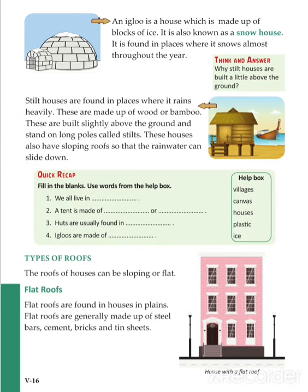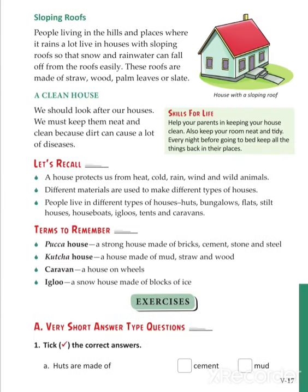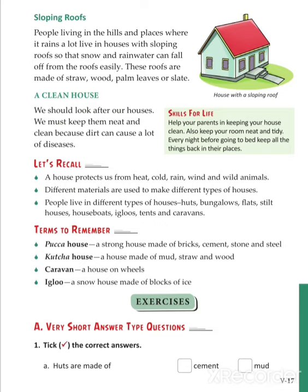Types of roofs: there are two types of roofs — one is a flat roof and the other is a sloping roof. Flat roofs are found in houses in plain areas, and sloping roofs are mostly found in hill areas, rainfall areas, or sometimes in snowfall areas. The main purpose of sloping roofs is to drain the water or snow which falls on the slope.